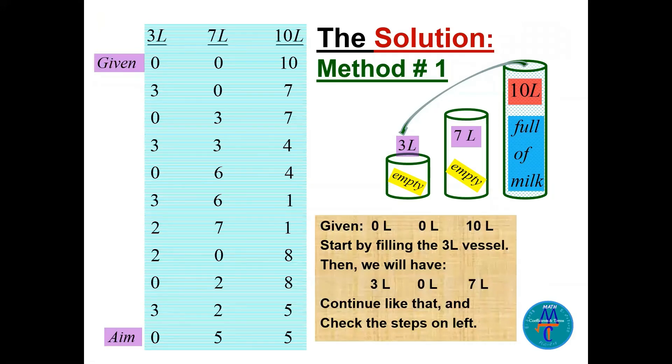Now the method number one. I'll put two methods, that's a surprise here. Method number one: I will start and say the given is 0, 0, 10. This is the given. So I start pouring from the 10 liters into the three. I will go by the numbers, easy to understand without writing. So if you pour from the 10 here to make it full, it will be 3, 0, and 7.